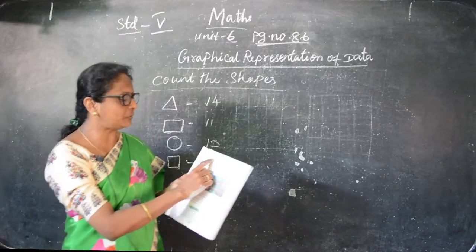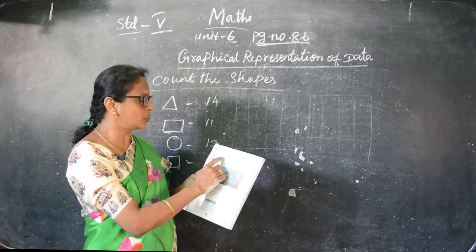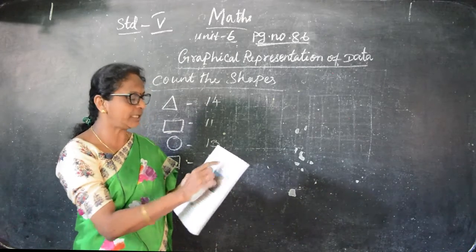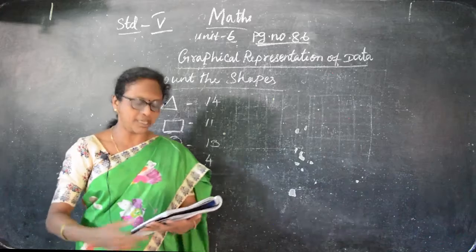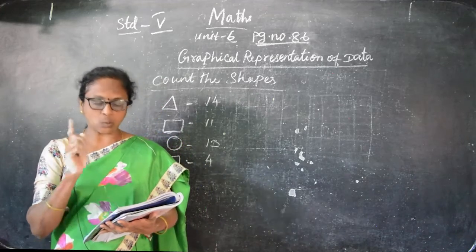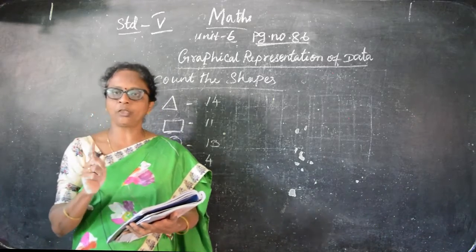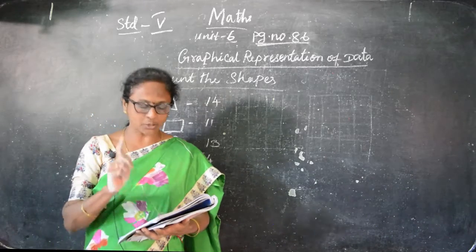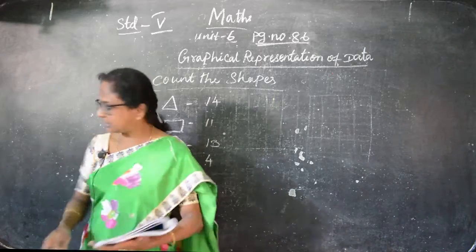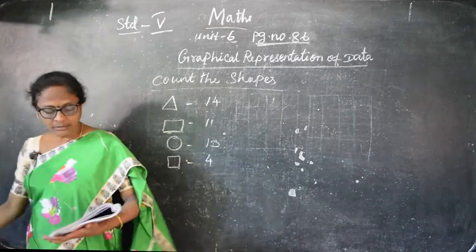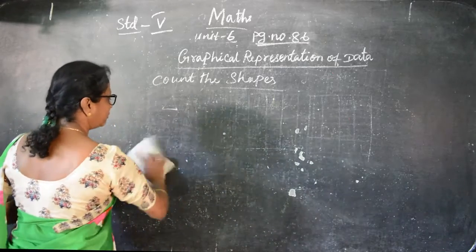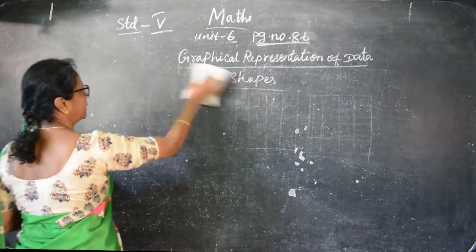Items you have to write at the top. Pencil box - 2 numbers. Pen - 3 numbers. Eraser - 3 numbers. And then scale - 1 and water bottle is 2. So you can count and write everything.